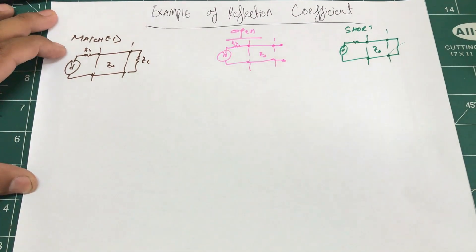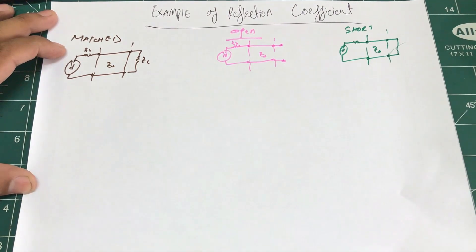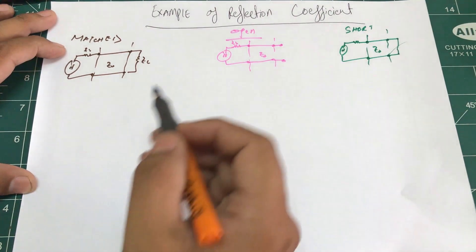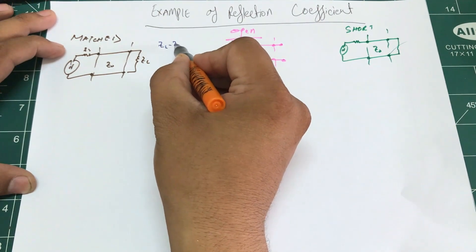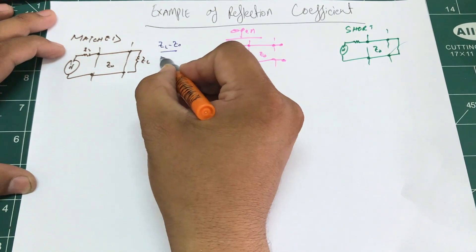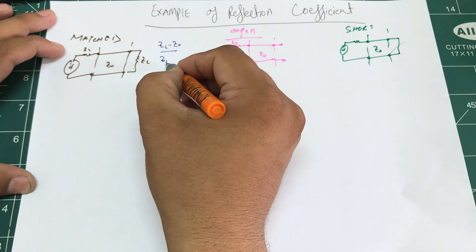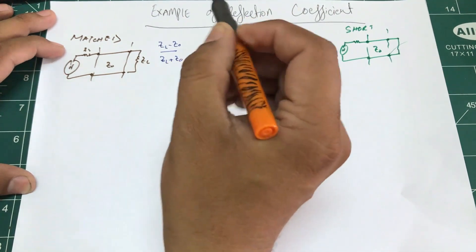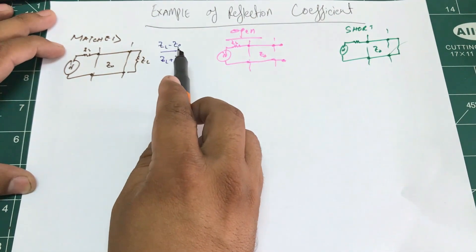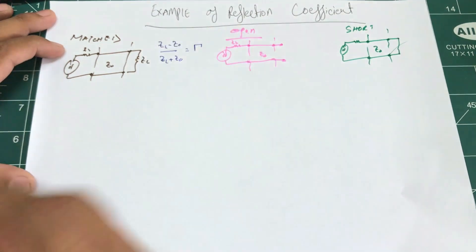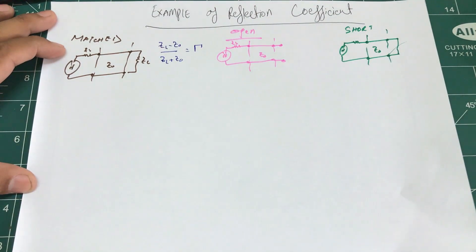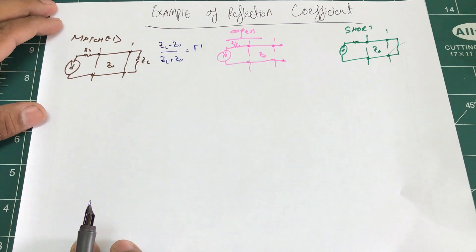In our last video we derived the reflection coefficient definition. The definition of the reflection coefficient is given as ZL minus Z0 divided by ZL plus Z0, and that is known as your voltage reflection coefficient.